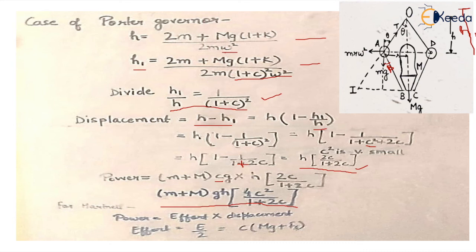So the power becomes the effort of the governor, which is (m+M)g, into h, into displacement which is h into 2c upon (1+2c). So this is the power: mass of ball plus mass of sleeve into g into height of the governor into 4c squared upon (1+2c), where c is the change in the speed, the factor with which the speed is changing.